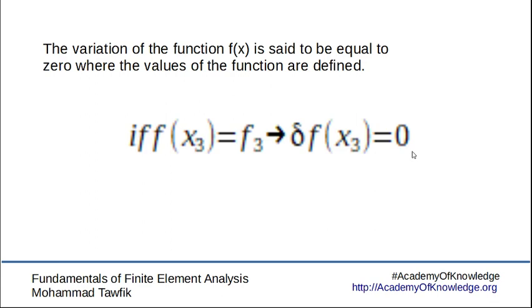Meaning that it doesn't have any freedom, it cannot change its value. It's predefined. Predefined is something that we can say like applying a boundary condition or imposing a constraint on the function. So if the function is constrained with a certain value, then its variation is defined to be equal to zero.